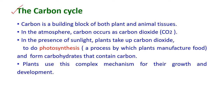The carbon cycle: carbon is a building block of both plant and animal tissues. In the atmosphere, carbon occurs as carbon dioxide. In the presence of sunlight, plants take up carbon dioxide to do photosynthesis — a process by which plants manufacture their own food — and by photosynthesis the plants form carbohydrates that contain carbon, using this complex mechanism for their growth and development.